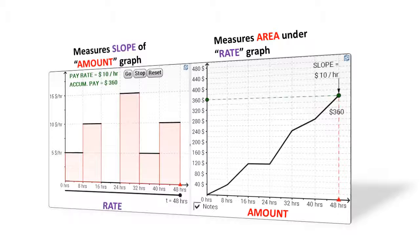So notice that for each segment of eight hours of work time, the slope on the right corresponds to the pay rate on the left. Notice especially at this point, between 16 and 24 hours, that apparently we called in sick, and so we earned $0 per hour, and that corresponds to a zero slope.